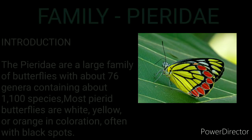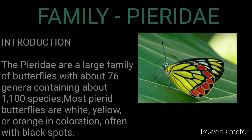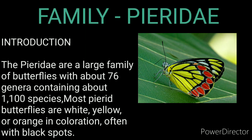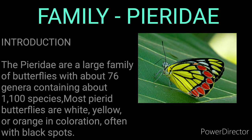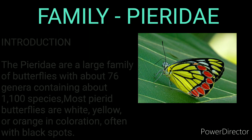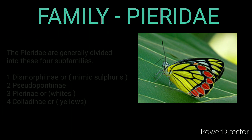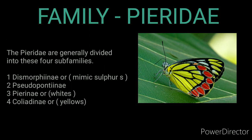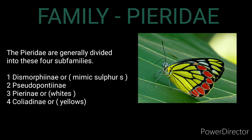The Pieridae are a large family of butterflies with about 76 genera containing about 1,100 species. Most Pieridae butterflies are white, yellow, or orange in coloration, often with black spots. The Pieridae are generally divided into four sub-families.